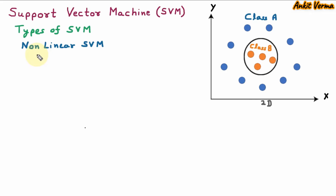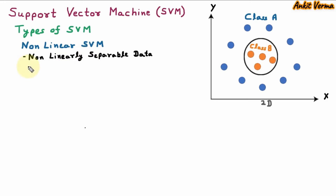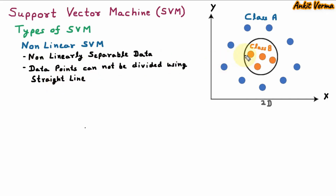The next type of SVM is Non-linear SVM. Non-linear SVM contains non-linearly separable data. Non-linear means not separated by a line. So here data points cannot be divided using a straight line. In the diagram, there is class A with blue data points and class B with orange data points. These two classes cannot be divided using a straight line. So this is Non-linear SVM. In Non-linear SVM, the kernel trick is used to classify data.